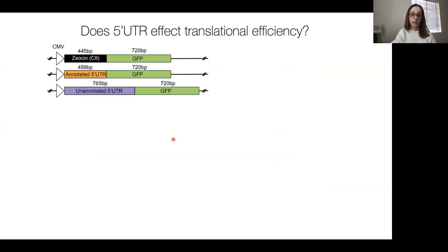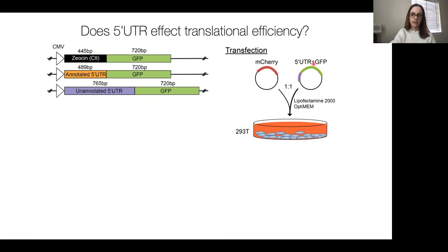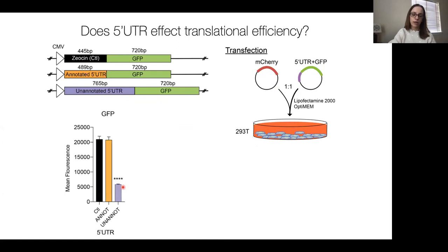To do this, we did a simple assay: take a GFP reporter, clone in the annotated 5' UTR or our new unannotated 5' UTR or a control, and monitor GFP production. We did this in 293 cells, transfecting in our UTRs, GFP, or a control mCherry plasmid. We were really interested to see that indeed this new unannotated 5' UTR does result in decreased translational efficiency for GFP—we're producing less than half the amount compared to the annotated UTR. And this is our mCherry as a control.